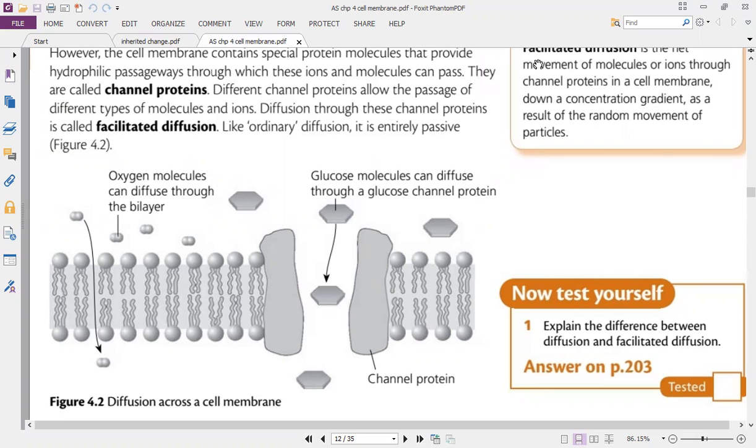they need a channel protein or a carrier protein. The channel protein has a watery pathway through which this glucose molecule will enter. The pore will be lined by certain amino acids with R groups, and these R groups will be forming temporary bonds with the substance that's moving. For example, here it's moving glucose, so the channels are very specific.